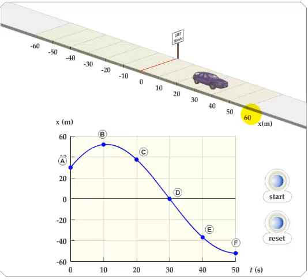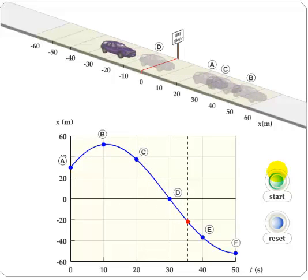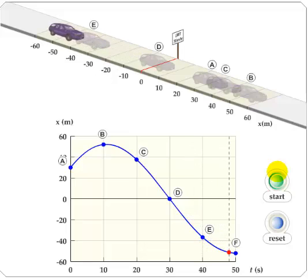So all you do is click start and watch the car in association with the plotted graph goes from A to F and you can see the corresponding positions for all those letters.